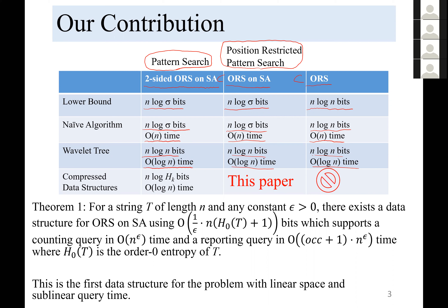If we use a wavelet tree, then the space is much larger than the lower bound L·log(Sigma), so we want to compress this space. For two-sided ORS on suffix arrays, there is a compressed data structure called the compressed suffix array or FM-index. The space is roughly n·H_k, where H_k is the order-k entropy of the text, and the query time is O(n).